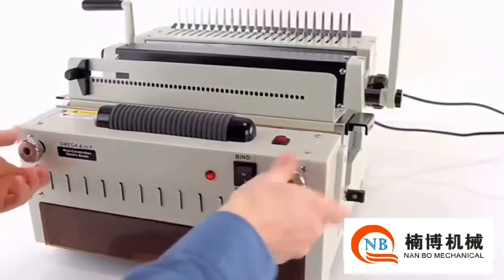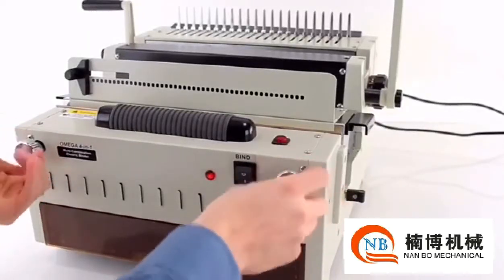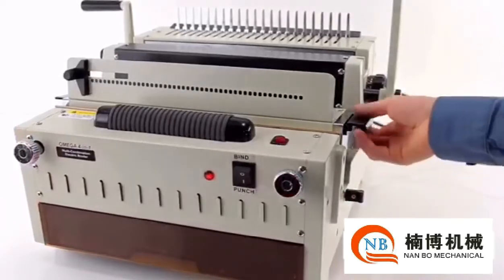The machine comes with four interchangeable dies: a comb die, 3-to-1 wire, and 2-to-1 wire.